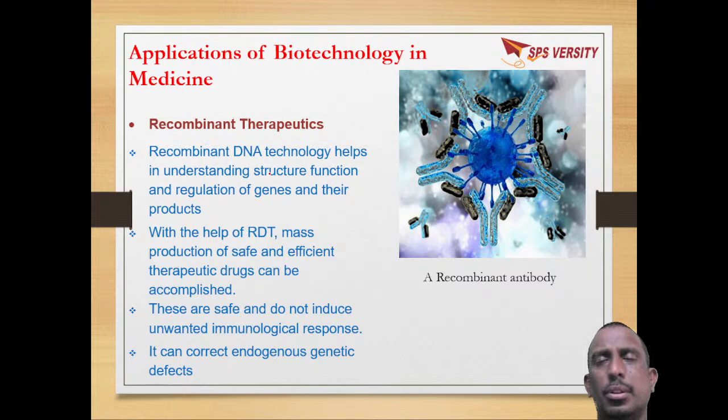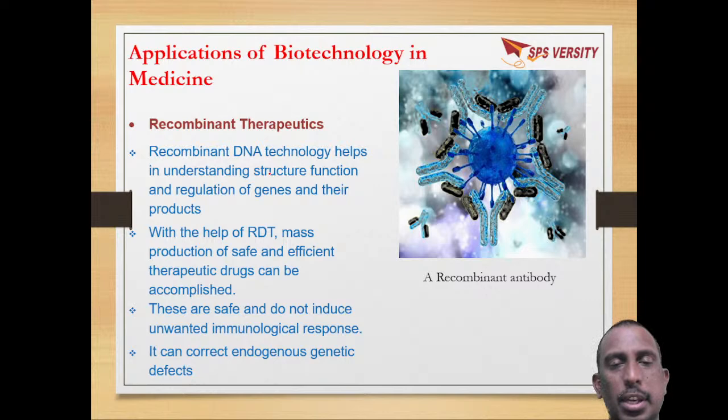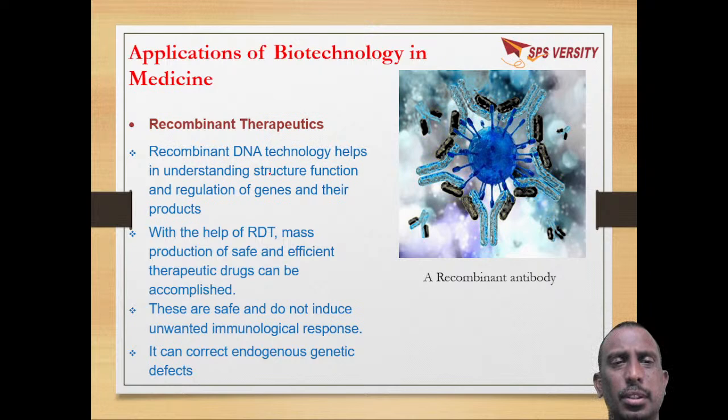So till now we have discussed about the applications of biotechnology in agriculture — one is Bt cotton, another is RNA interference, which is a defense mechanism in eukaryotes used to make plants nematode-resistant.